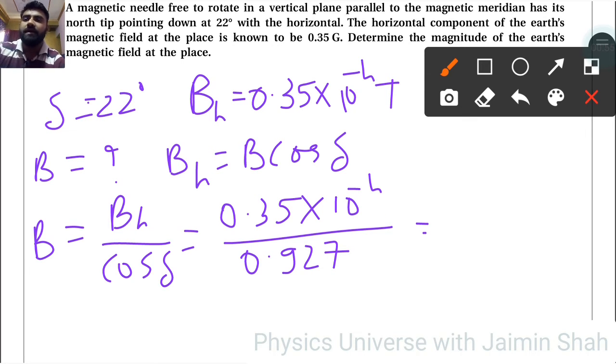0.35 upon 0.927 is equal to 0.378 into 10 raised to minus 4 Tesla. So that is the magnetic field, that is the magnitude of earth's magnetic field at that place.